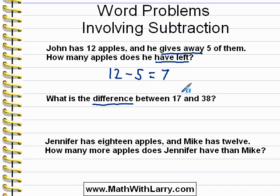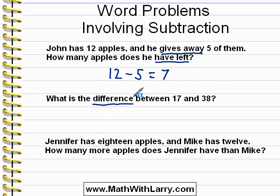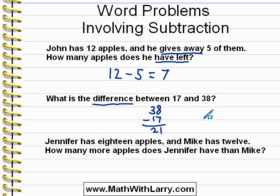For a problem like this, what we want to do is the larger number minus the smaller number. To find the difference between two numbers, we always do larger number minus smaller number. So I'll simply do 38 minus 17, lining up the numbers, and we get 21 as our answer. That's the difference between those two numbers — we subtract to find the answer.